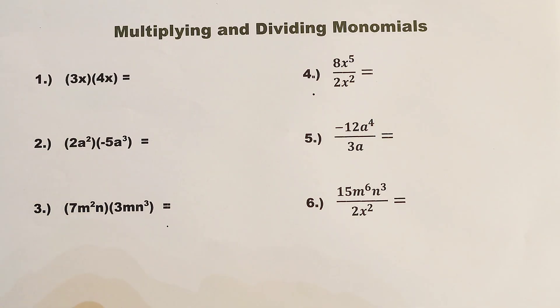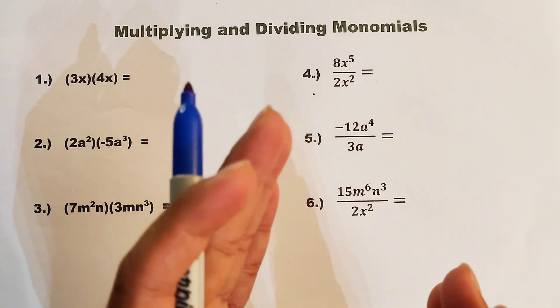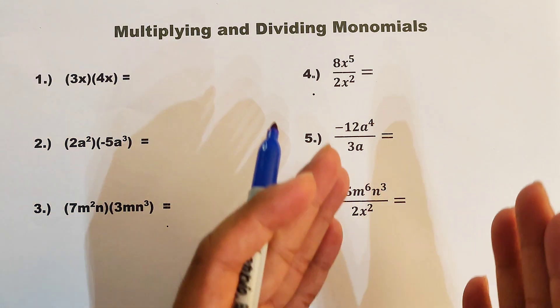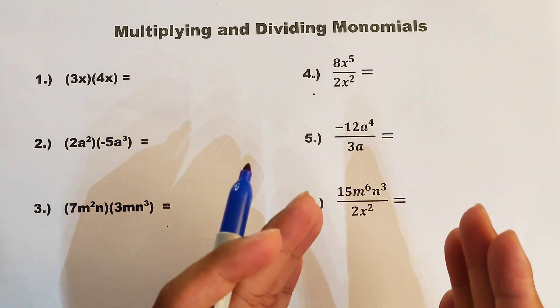Now for items number 1, 2, 3, it will focus on multiplying monomials. And here, for number 4, 5, 6, this one will focus on dividing monomials.